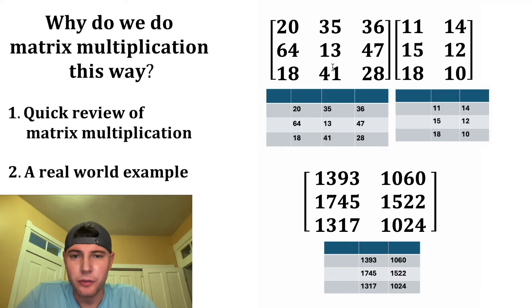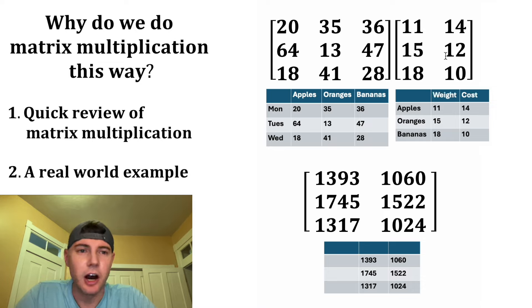And we can give them labels to make it a real world problem. We can make the columns of the first one apples, oranges, and bananas. And we can make the rows Monday, Tuesday, and Wednesday. And for the next one, we want to make the rows the same thing as these. So it's going to be apples, oranges, and bananas. And then the columns can be something like weight and cost. And since this is cost, let's add in a dollar sign.